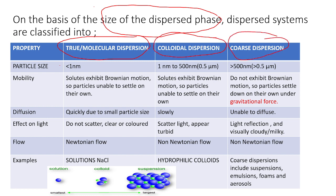The particle size in the case of molecular dispersion is less than one nanometer. The particle size in the case of colloidal dispersion is one nanometer to 500 nanometers. In coarse dispersion, the particle size is greater than 500 nanometers.